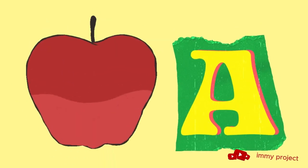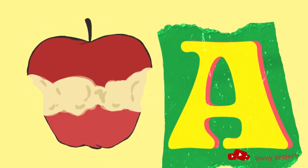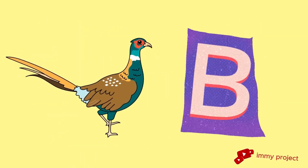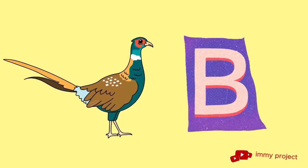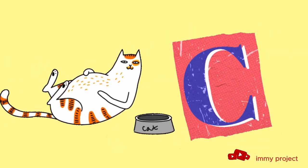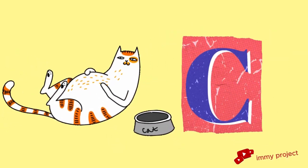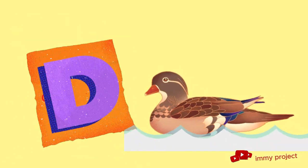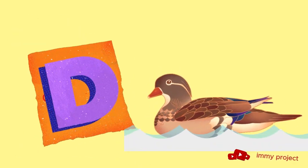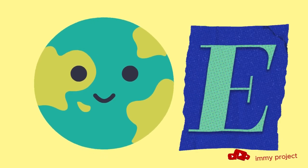This is A. A for apple. This is B. B for bird. This is C. C for cat. This is D. D for duck. This is E. E for earth.